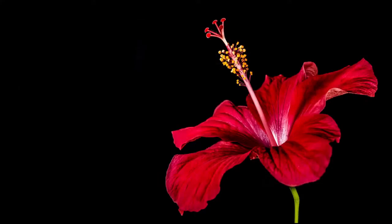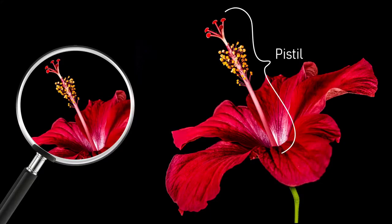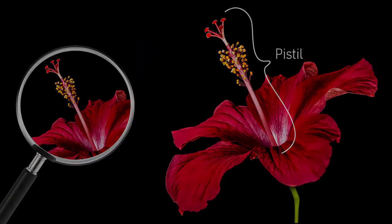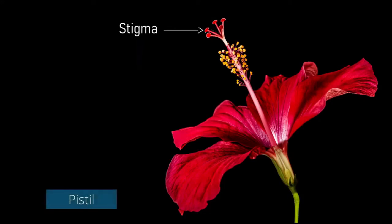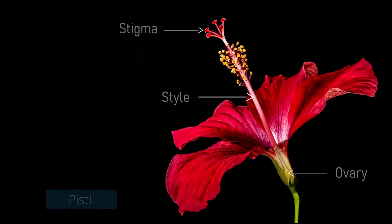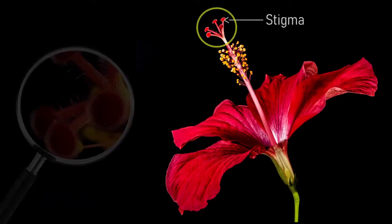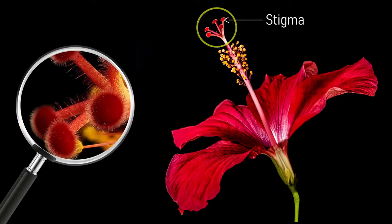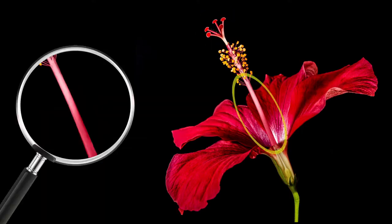The female part is called the Gynoecium. In this, the pistils are present. Each pistil or carpel contains a stigma, style, and ovary. The stigma is usually hairy and sticky to trap the pollen grains. The style connects the stigma to the ovary.